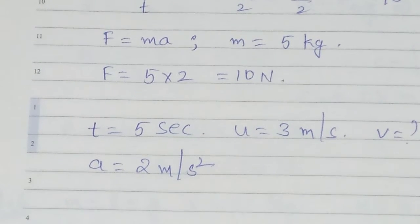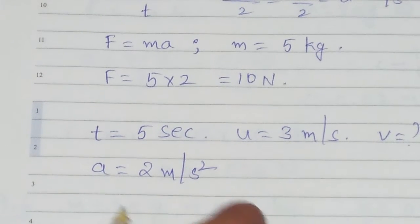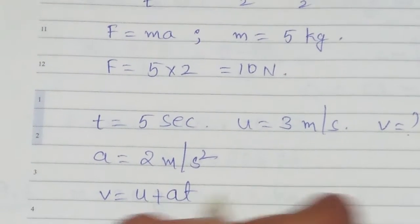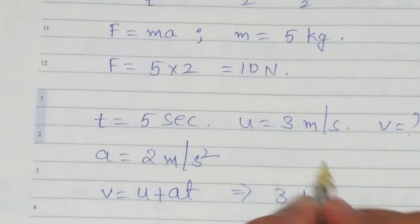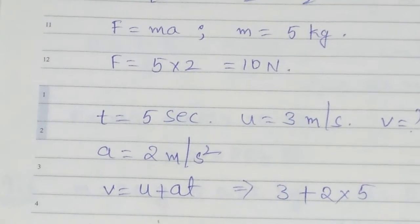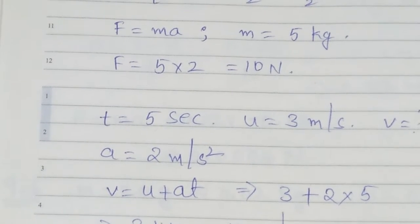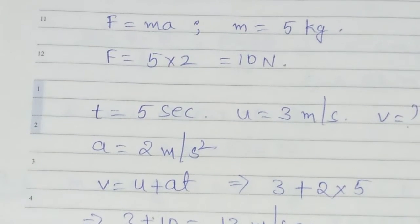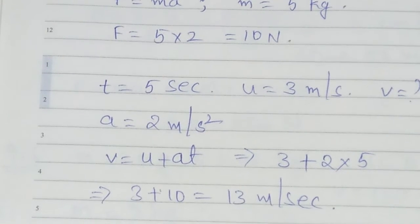Now, we can find out V value. The formula we have is V is equal to U plus AT. U value we have as 3, plus A value 2, into time 5. So what we will get here? 3 plus 10, that is nothing but 13 meters per second. So if the force is applied for 5 seconds, the final velocity of the object will be 13 meters per second.